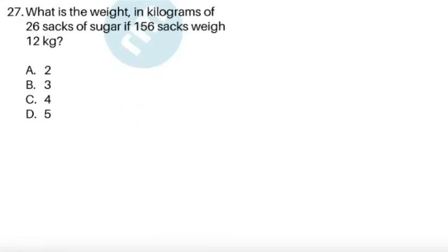For item 27, what is the weight in kilograms of 26 sacks of sugar if 156 sacks weigh 12 kilograms? All right. So what we have to do, we can write an equation. 156, let's just use S for sacks, is equal to 12 kilograms. So this is 12 kilograms. Now we want 26 sacks of sugar. So it's logical for us to multiply the factor 26 over 156 on both sides.